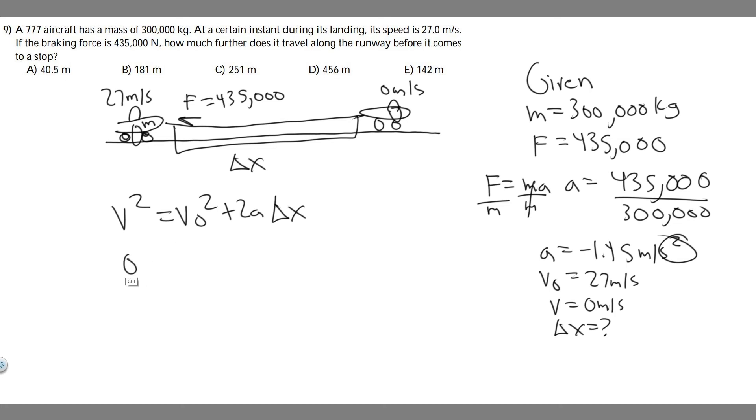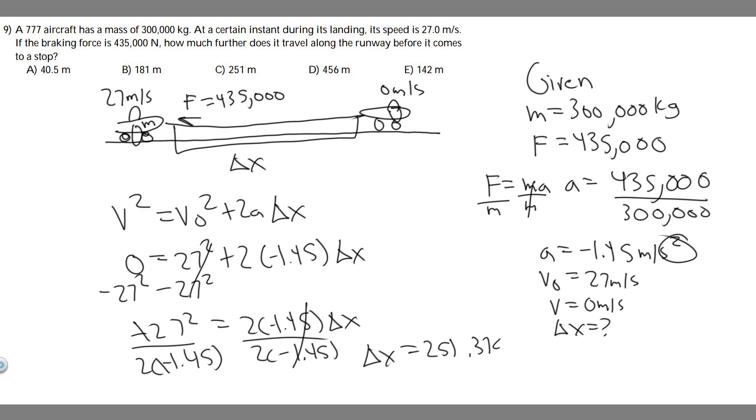So v is 0, so 0 squared is still 0 equals v sub 0 squared. So 27 squared plus 2 times a, which is minus 1.45, and then multiply it by delta x. So minus this to the other side. You're going to get minus 27 squared equals 2 times minus 1.45 times delta x. And divide by this. So keep in mind the negatives are going to cancel here. So you're going to do 27 squared divided by 2 times 1.45. So you'll get delta x equals 251.379 and so on.